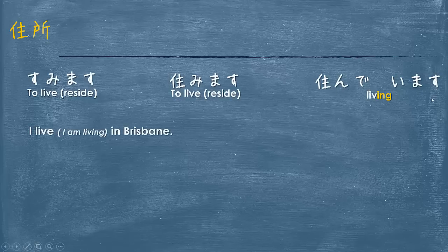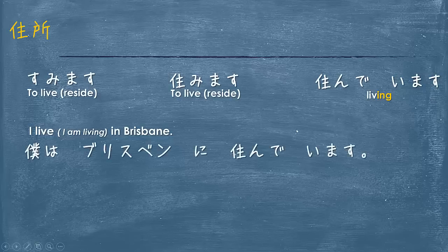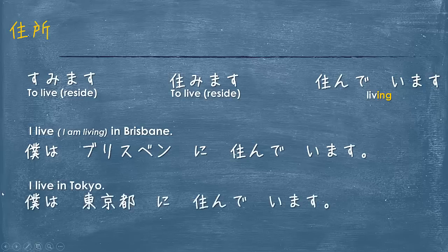So if I want to say I live in Brisbane, it would be: boku wa Burusuben ni sunde imasu. If I want to change that to Sydney, it would be: boku wa Shidoni ni sunde imasu. Tokyo: boku wa Tokyo-to ni sunde imasu. However, that's a little bit more formal, and in most cases they drop the -to, so you would hear: boku wa Tokyo ni sunde imasu.